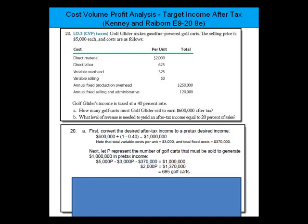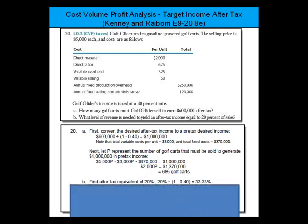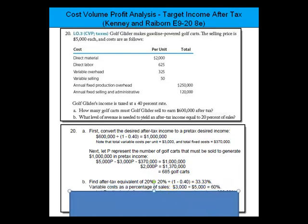Part B asks: what level of revenue is needed to yield an after-tax income equal to 20% of sales? Again, we first find the pre-tax equivalent of 20%. Taking 20% divided by 1 minus 40% gives us a pre-tax equivalent of 33.3%.